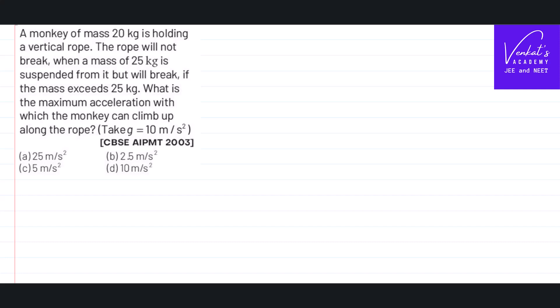This is an AAPMT question from 2003. The question is: a monkey of mass 20 kg is holding a vertical rope. The rope will not break when a mass of 25 kg is suspended from it, but it will break if the mass exceeds 25 kg.